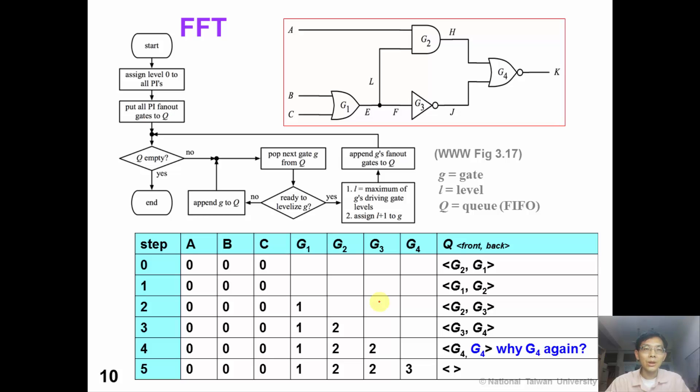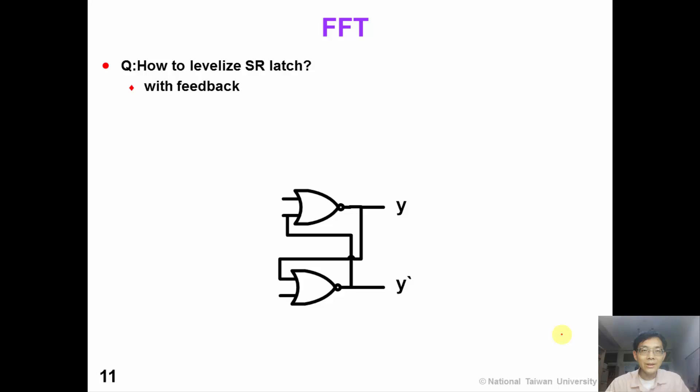At the end of the video, we have two interesting questions for you to think about. The first question is that why do we need to insert G4 back to the queue again since we already have G4? The second question is how can we levelize SRL edge which has feedback loop? I hope you enjoy these two interesting questions. Thank you.